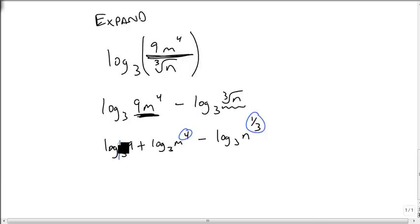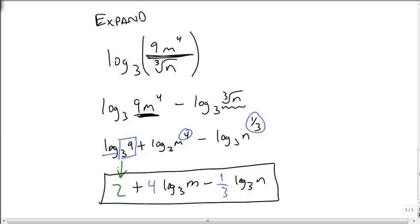Now we want to get rid of the powers. And where possible, we want to simplify our logarithms. So log base 3 of 9, what do I raise 3 to to get 9? That becomes a 2. We're then going to add, we move the power to the front, 4 log base 3 of m, power to the front, minus 1/3 log base 3 of n. And we now have a sum or difference of logs from our origin.